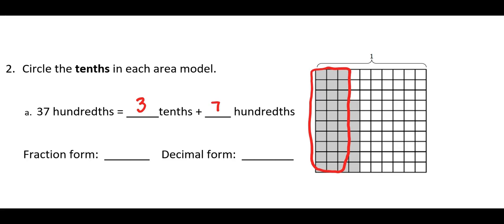In fraction form, we would call that 37 hundredths. And in decimal form, we would write 0 in the ones place, 3 in the tenths place, and 7 in the hundredths place. We can look at the 3 as 3 tenths, and then we have 7 hundredths, or we could look at it altogether as 37 hundredths.